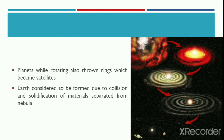Similarly, like the nebula, the planets, while rotating at great velocity on their own axis, also threw out rings which became our satellites. Thus, the earth is considered to have formed due to the collection and solidification of materials separated from the nebula in the form of rings due to strong centrifugal force.